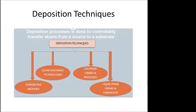Different deposition techniques are used to controllably transfer atoms from a source to the substrate, where the thin layer deposition takes place — similar to lithography techniques. The four main deposition techniques are: evaporative methods, glow discharge technologies, gas phase chemical processes, and liquid phase chemical formation.